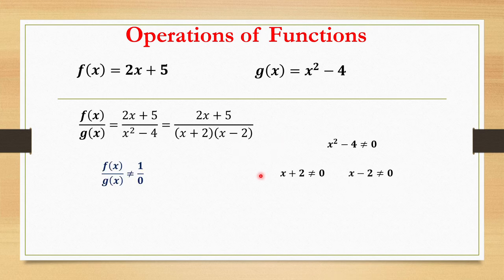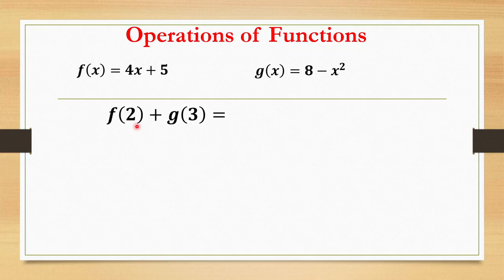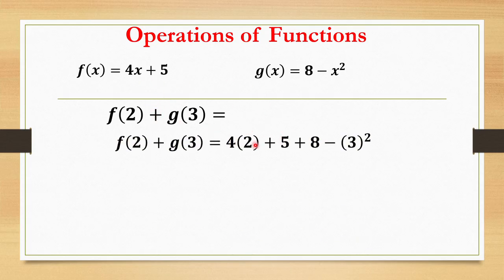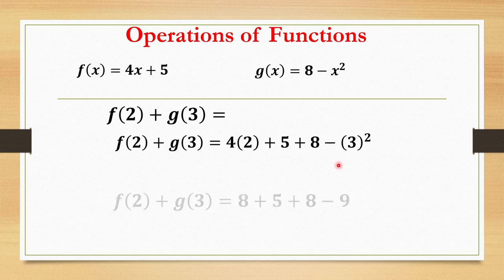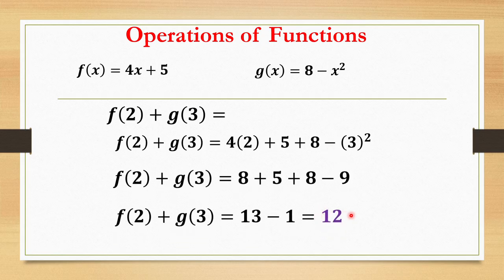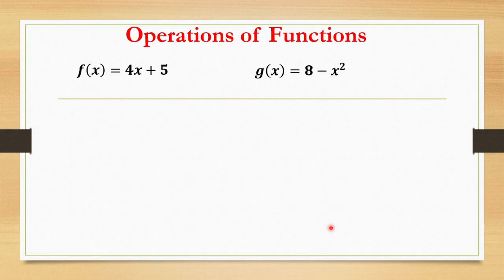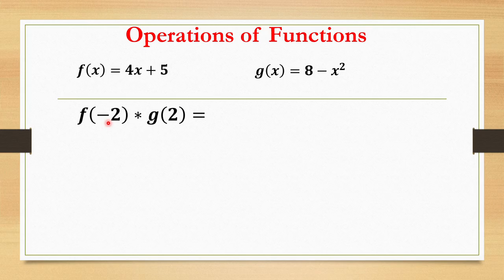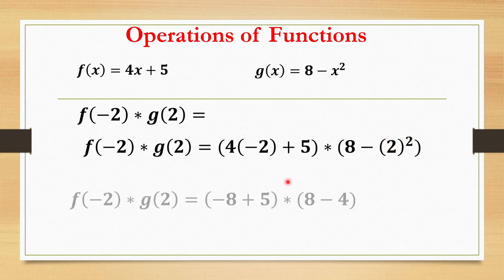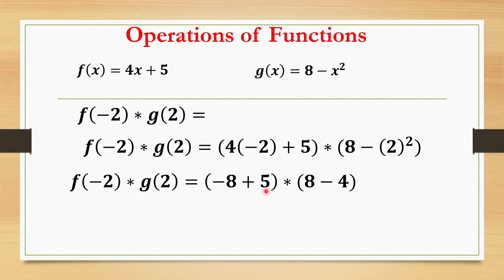Now what if we have a value for x in f(x) and g(x)? We just substitute and perform the operation. For multiplication: 4 times negative 2 plus 5 times 8 minus quantity 2 squared. Remember the negative is only for the x value, not squared. We have negative 8 plus 5 times 8 minus 4, so we have negative 3 times 4 equals negative 12. The final answer is negative 12.